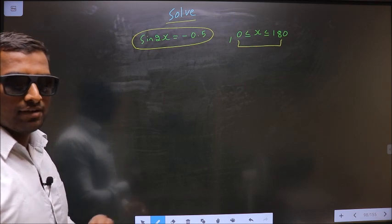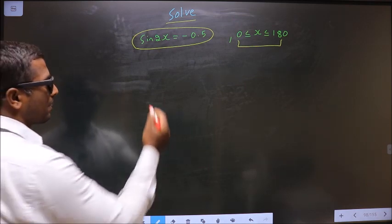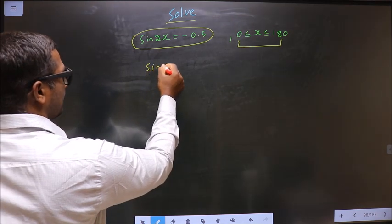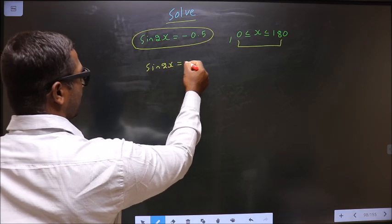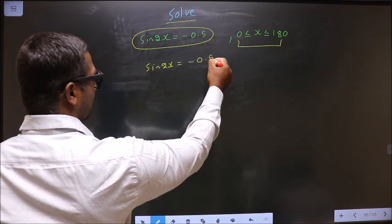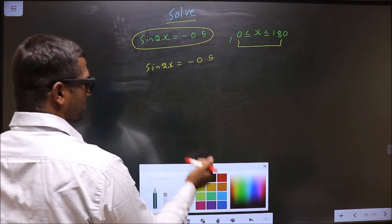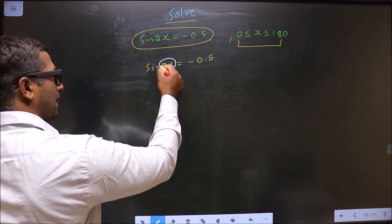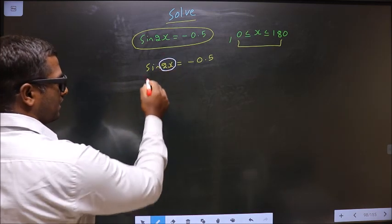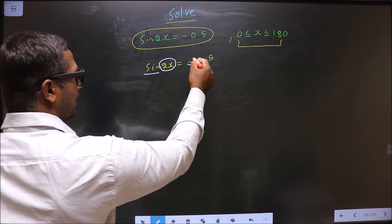First, the given equation is sin 2x equal to minus 0.5. Now to get the values for 2x, here we have sin and here it is negative.